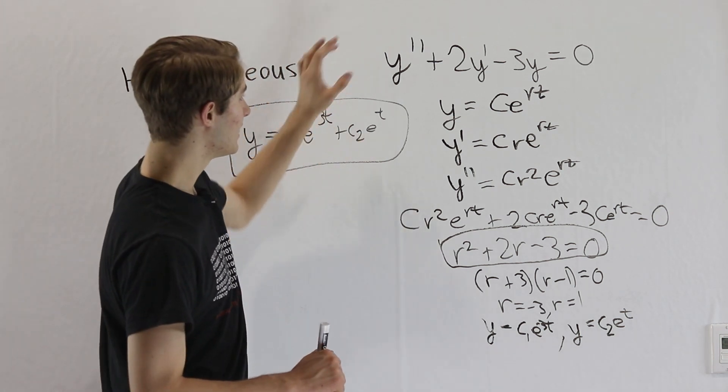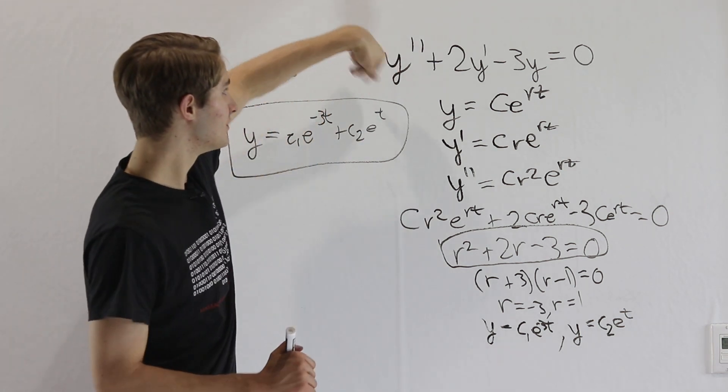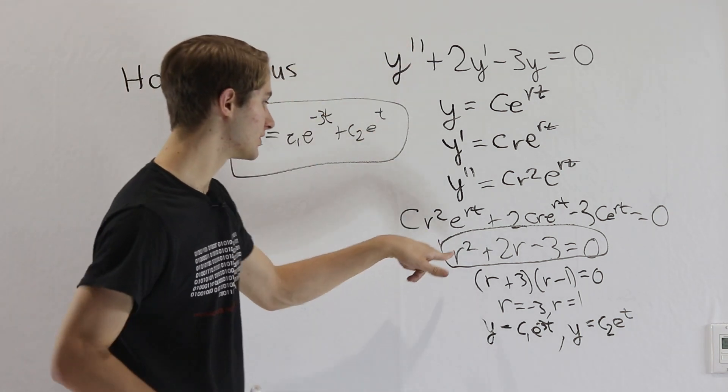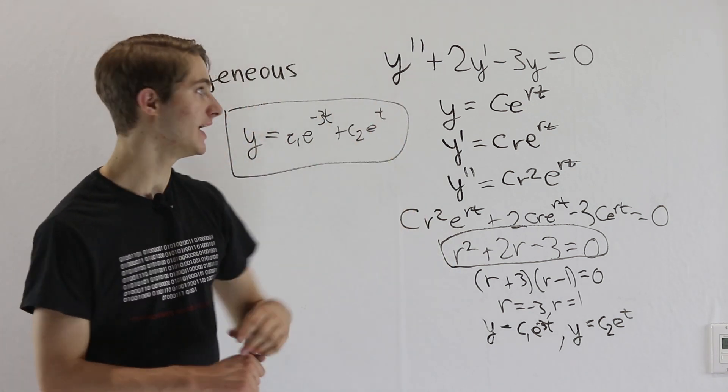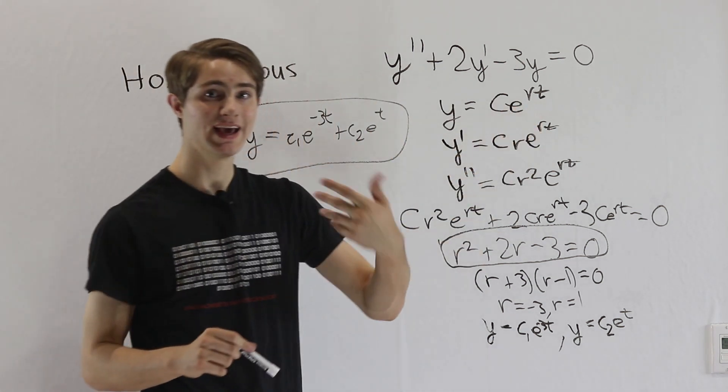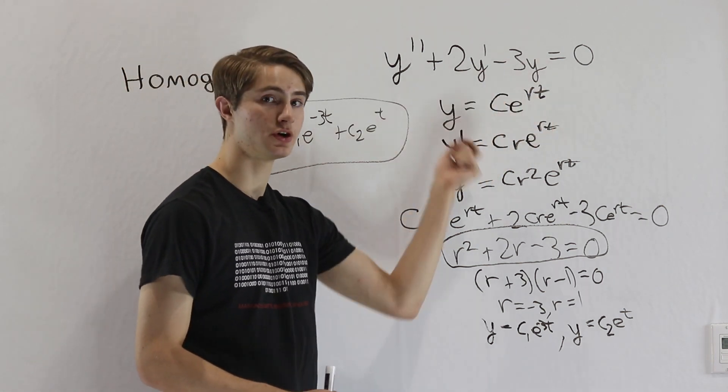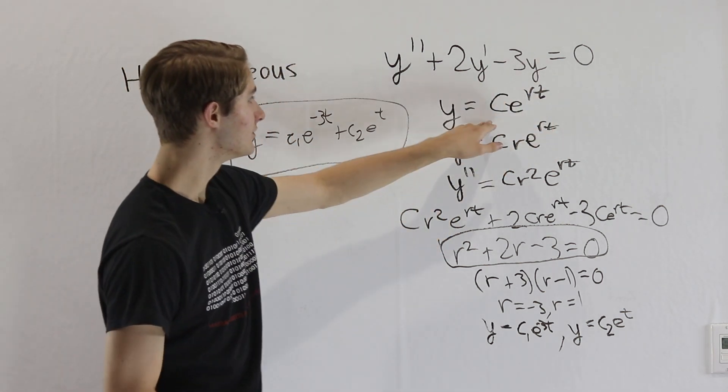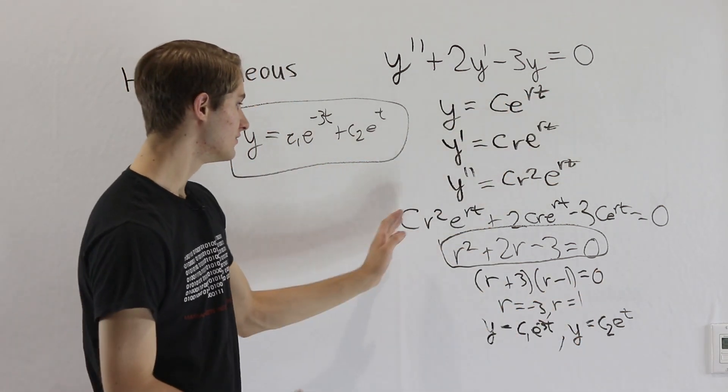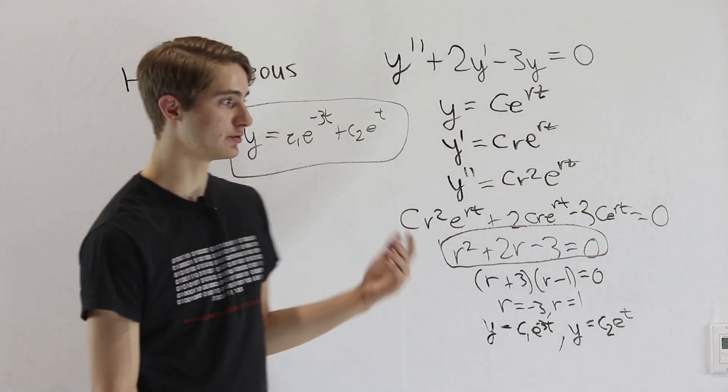So in general, if we have an equation where there's the kth derivative of y on this side, that's going to translate to r to the power of k, because when we differentiate e to the rt k times, we're going to end up with an r to the k out in front, and the c and the e to the rt are eventually all going to get cancelled out of this equation right here.